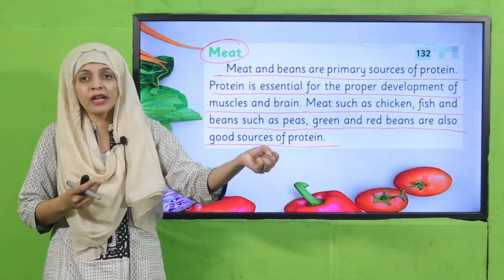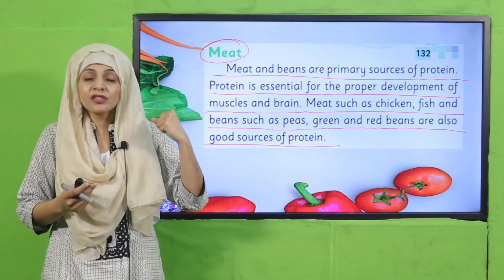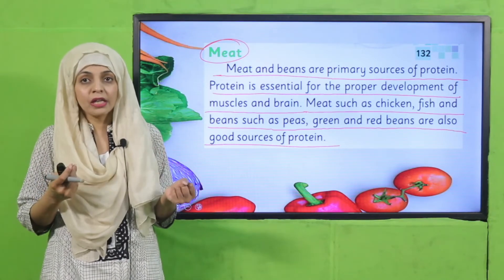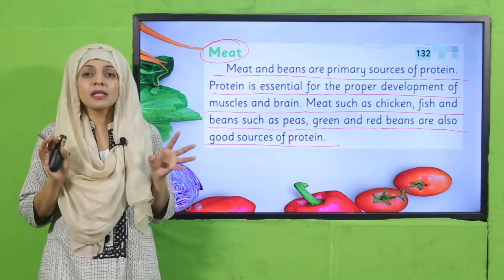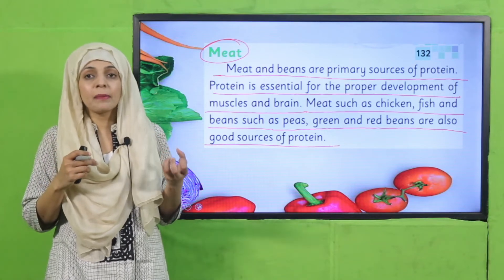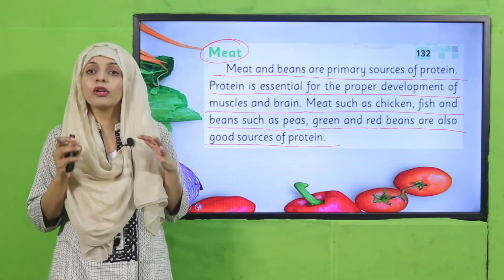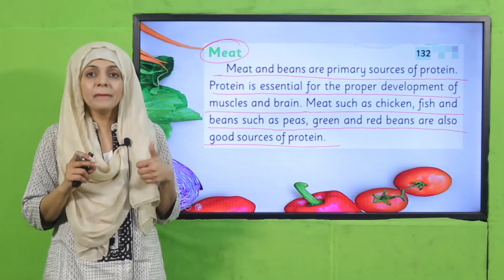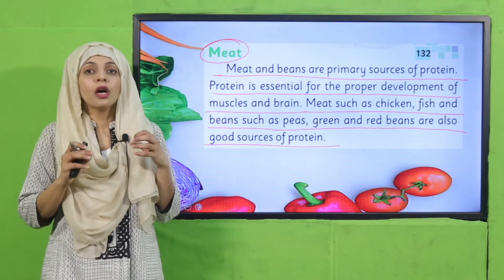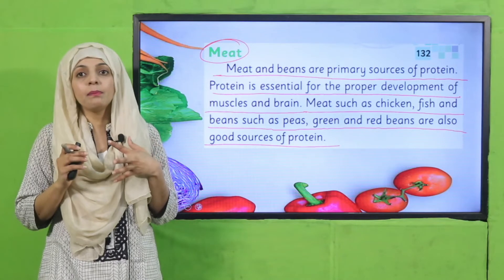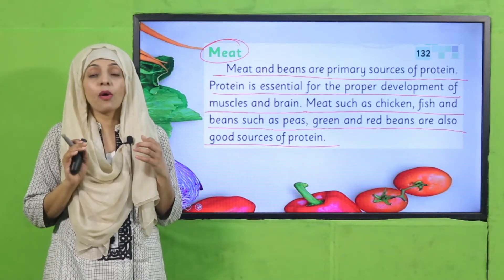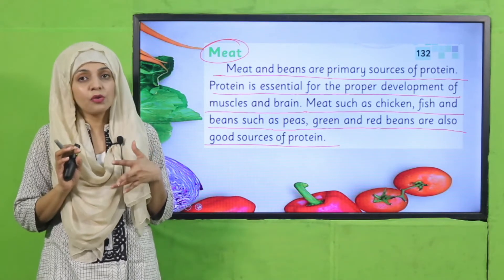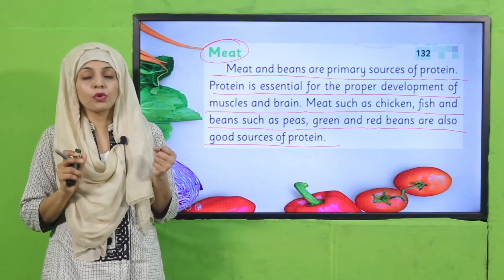Muscles help you in movement - they help your bones to move. If your muscles are strong then your body will move strongly and be active. For muscles to build and stay active, protein is very important. We get protein from meat like chicken, fish, red meat such as mutton and beef. We also get it from beans and lentils like red beans and green beans.